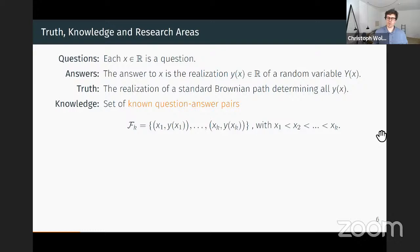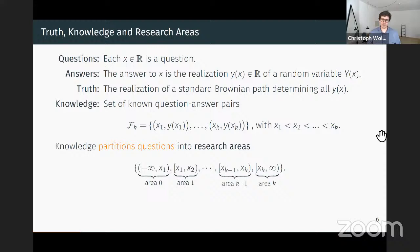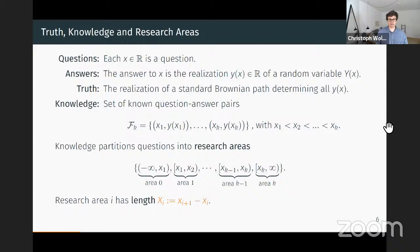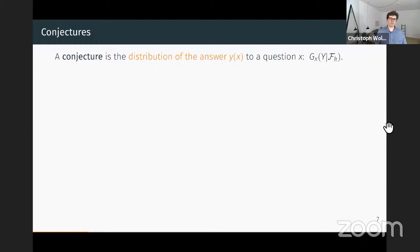To make notation easier, questions in knowledge are ordered by position on the real line: X1 is the leftmost question and XK is the rightmost. Knowledge partitions questions into different research areas: from minus infinity to X1 is the first research area, X1 to X2 is the second, and so on until research area K, which goes from the rightmost known question to infinity. The length of a research area is the upper bound minus the lower bound. Areas zero and K have infinite length.